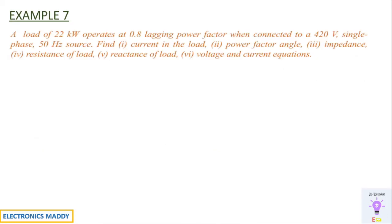Example seven: a load of 22 kW operates at 0.8 lagging power factor when connected to a 420 V, single-phase, 50 Hz source. Find current, power factor angle, impedance, resistance, reactance, and voltage and current equations. The lagging power factor confirms it is a series RL circuit. Given: P = 22 kW, power factor = 0.8, V = 420 V, f = 50 Hz.